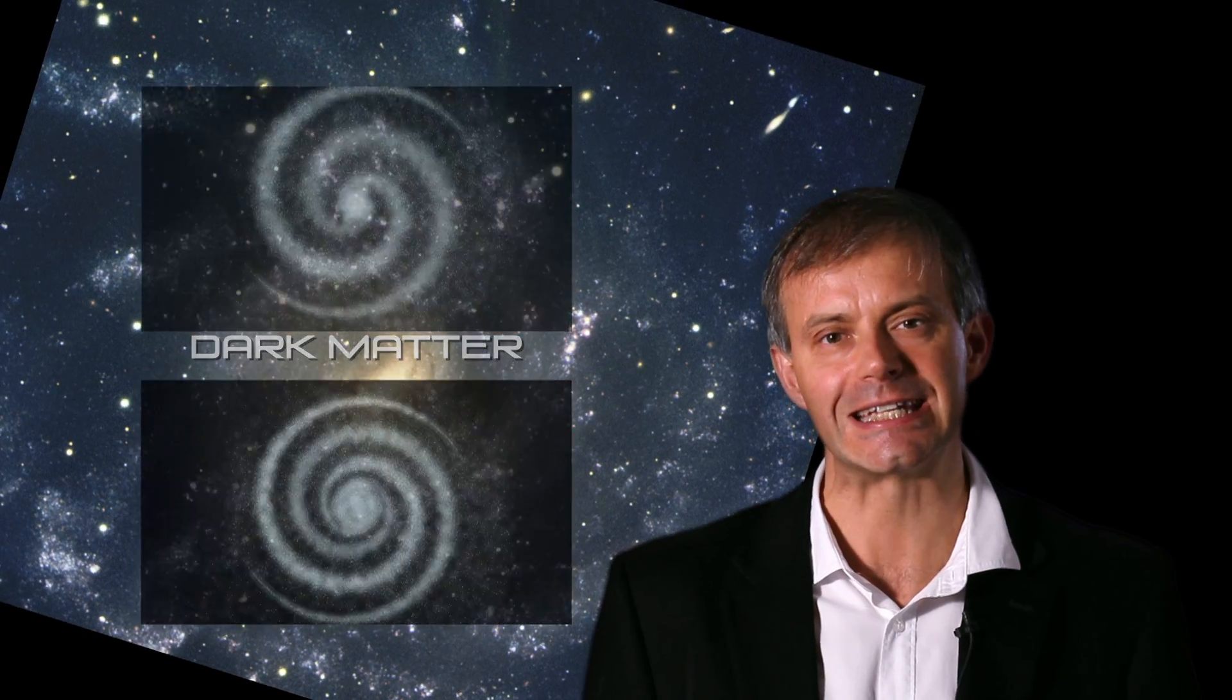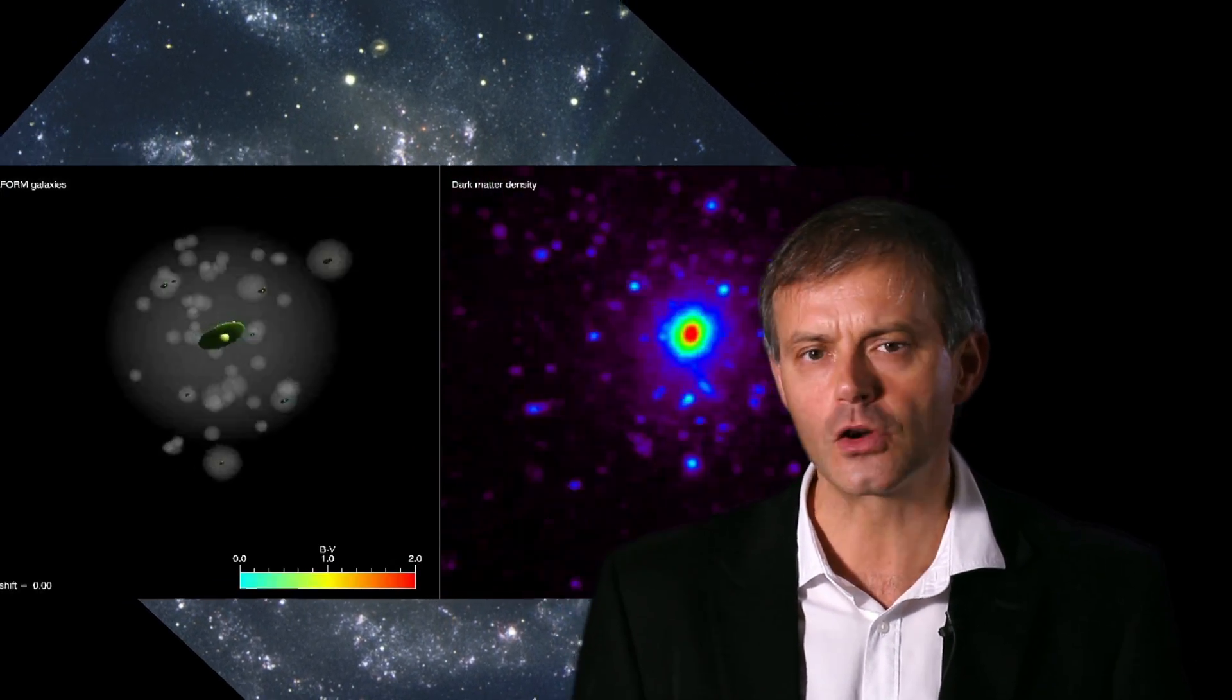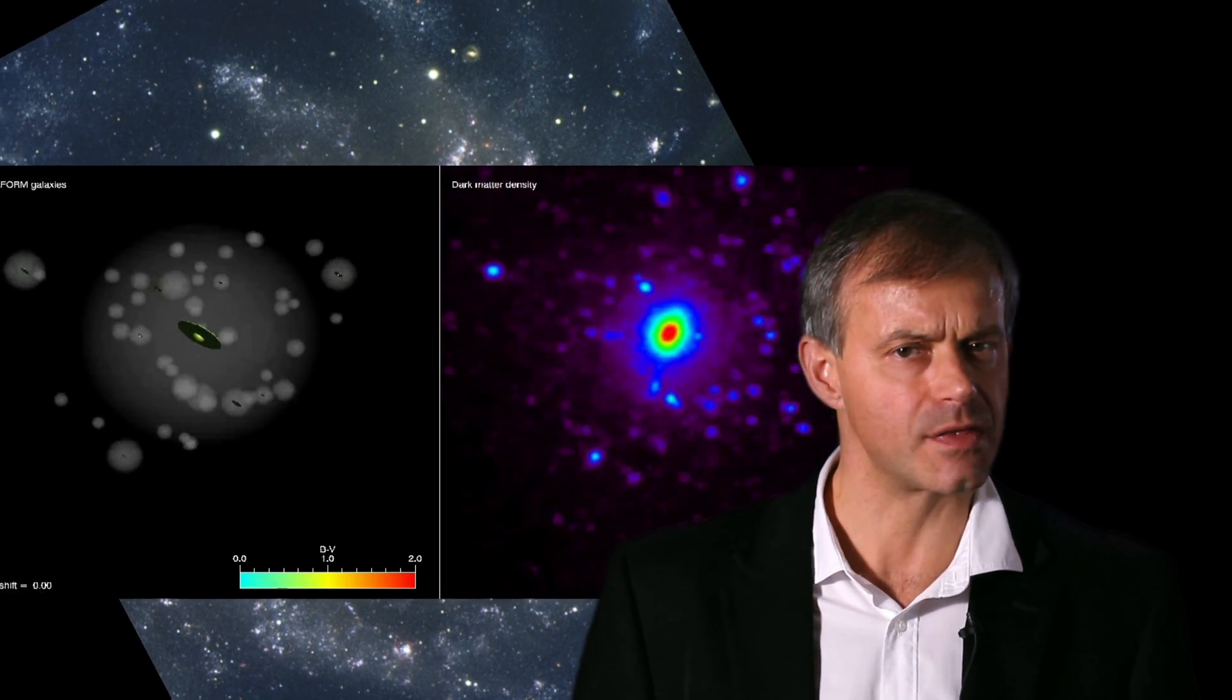This fact could only be explained by the presence of a halo of dark matter in the spiral galaxy. A halo of dark matter that has between 5 to 10 times the quantity of the observed bright matter.